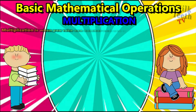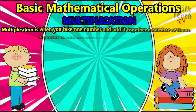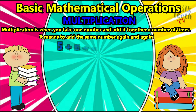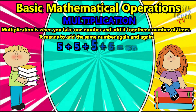Multiplication is when you take one number and add it together a number of times. It means to add the same number again and again repeatedly — it is also called repeated addition. For example, five plus five plus five plus five plus five equals twenty.